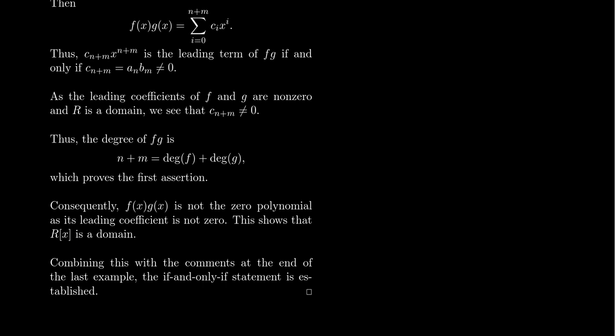Combining what we've shown with the earlier example, the other direction is also true: if r[x] is a domain but the coefficient ring were not a domain, we could create non-zero elements whose product is zero. Since r can be viewed as a subring of r[x], if the larger ring has no zero divisors, the smaller ring cannot either. So we get the if-and-only-if: r is a domain if and only if r[x] is a domain.